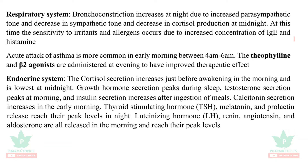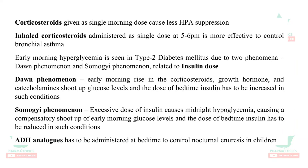In the endocrine system: cortisol secretion increases just before awakening in the morning and is lowest at midnight. Growth hormone secretion peaks during sleep. Testosterone secretion peaks in the morning. Insulin secretion increases after ingestion of meals. Calcitonin secretion increases in the early morning. Thyroid stimulating hormone, melatonin, and prolactin reach their peak levels at night. Luteinizing hormone, renin, angiotensin, and aldosterone are released in the morning and reach their peak levels. Corticosteroids given as a single morning dose cause less hypothalamus-pituitary-adrenal suppression. Inhaled corticosteroids administered as a single dose at 5–6 pm are more effective to control bronchial asthma.